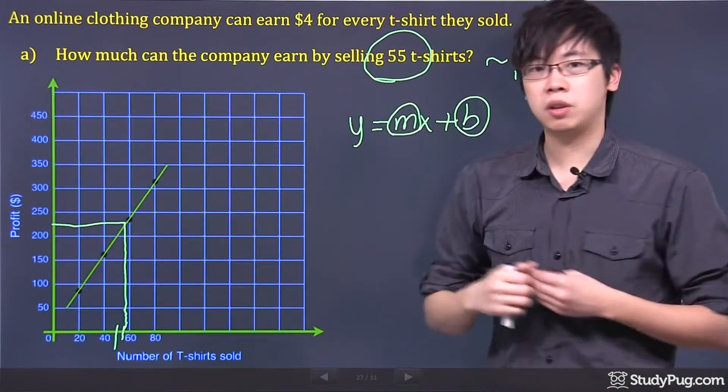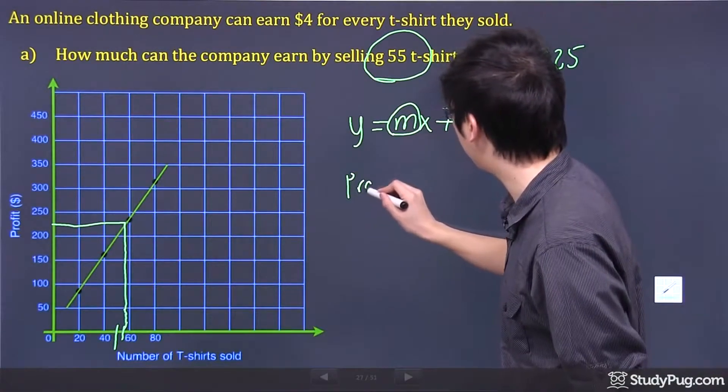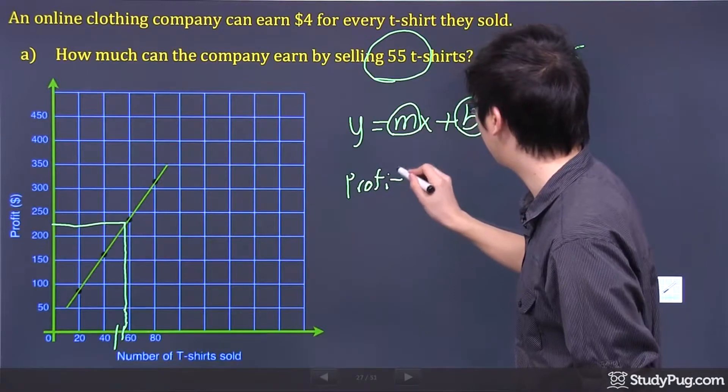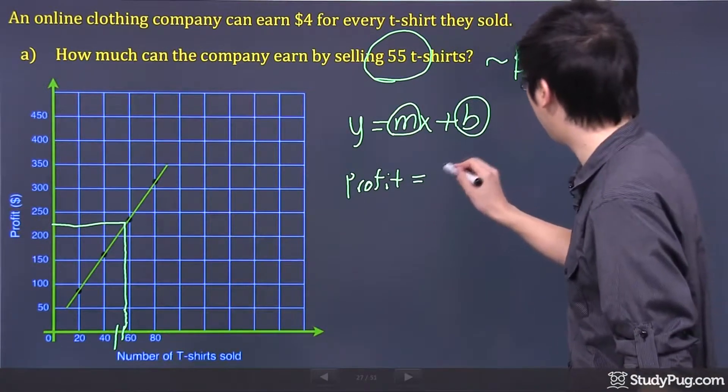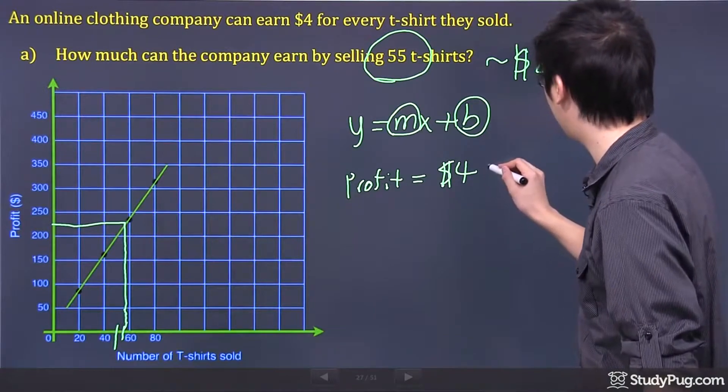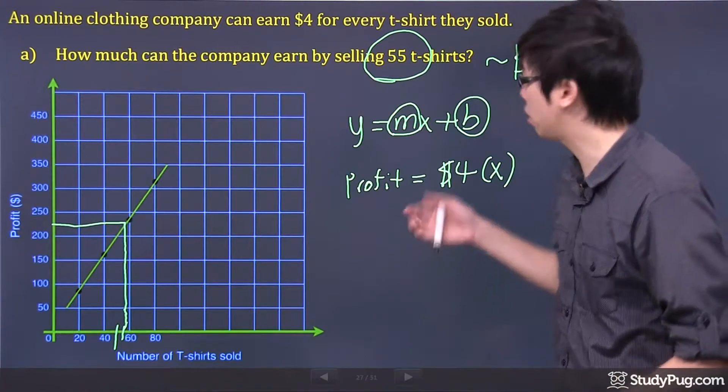You're earning $4 for every t-shirt. So the money they're going to make, let's call it the profit right here, the profit, okay? Which is the money that you're going to make. It simply equals to $4 for every t-shirt, right? So let's call that x. That's it. That is the linear equation right here.